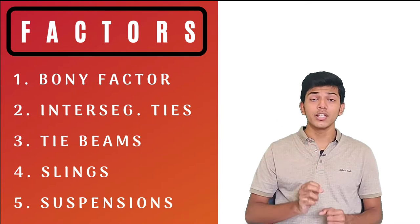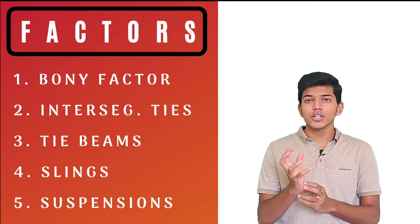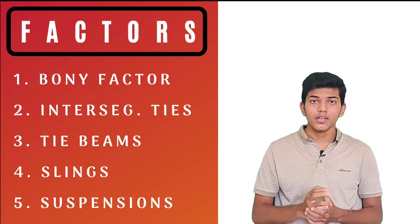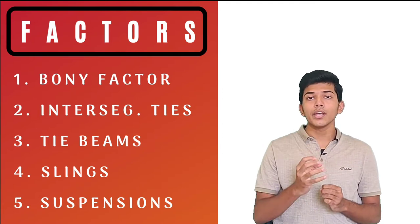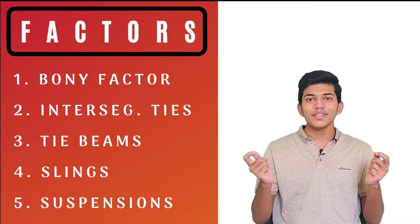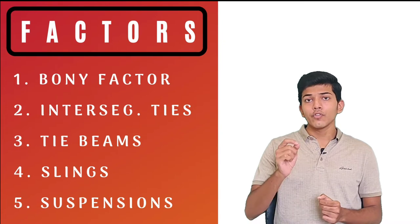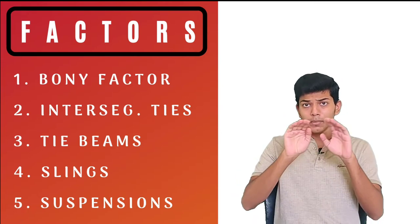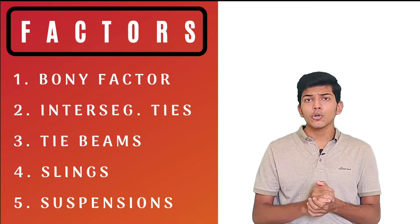There are five main factors which help in maintaining the structure of arches. Factor number one is the shape of bones. Factor two is intersegmental ties — structures which help to bind the different segments of the arch together. Factor three is tie beams, which keep the ends of arches pulled together and help maintain concavity. Factor four is slings, which pull the summit up to maintain structure. Factor five is suspension, which helps maintain the overall structure of the arch.